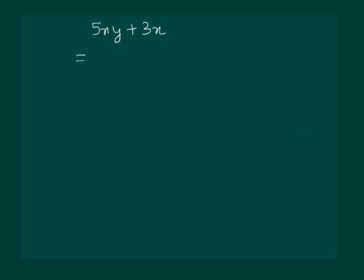We can see that x is common in both the terms. So let us try to write it as x common. Then what remains is 5y plus 3, which is actually x multiplied by 5y plus 3.